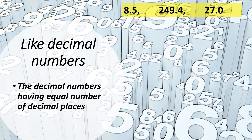For example, 8.5 — here the decimal part consists of only one digit, 5. Again, 249.4 — here also the decimal part has only one digit. And 27.0 — here also there is only one decimal place. So in all these three decimal numbers, there are an equal number of decimal places — just the tenth place. It means 0.5, 0.4, and 0.0 — just one digit in the decimal place. So all these three are like decimal numbers.